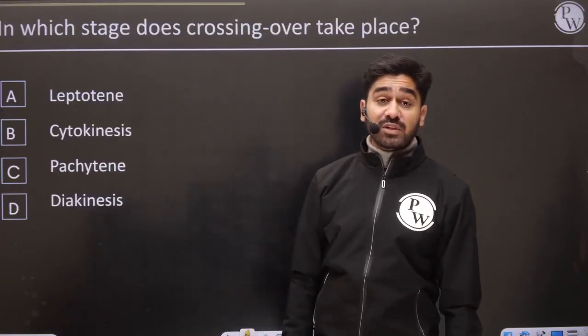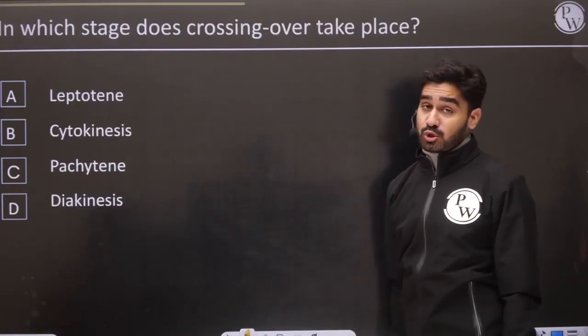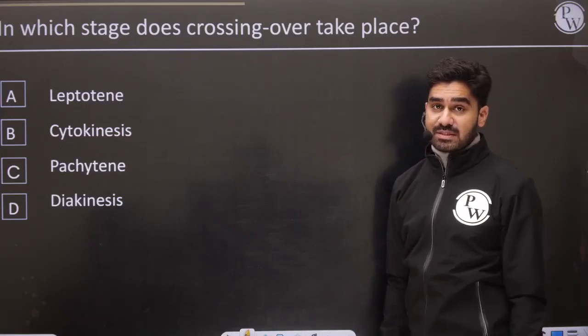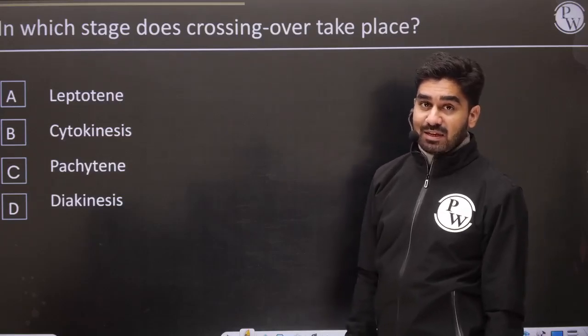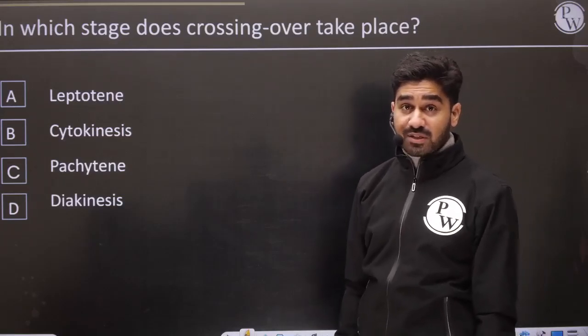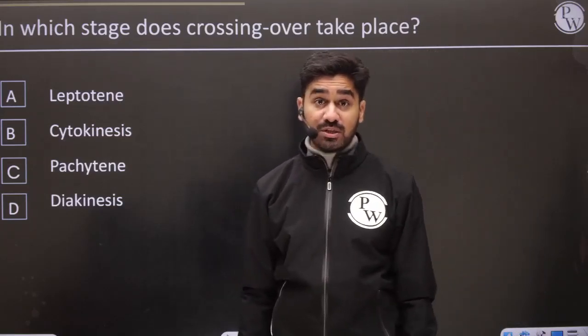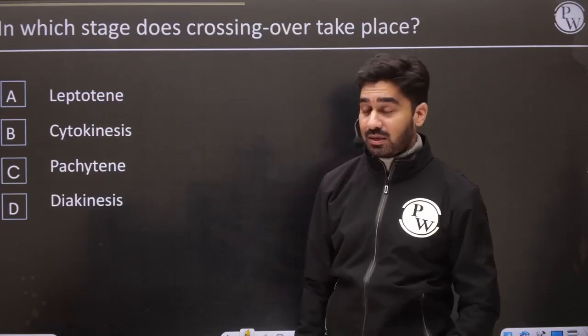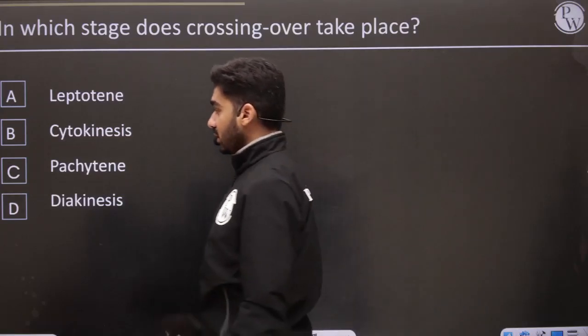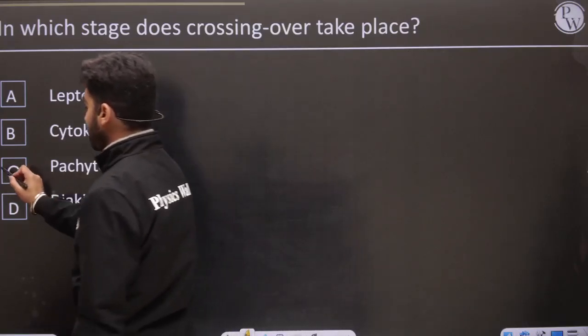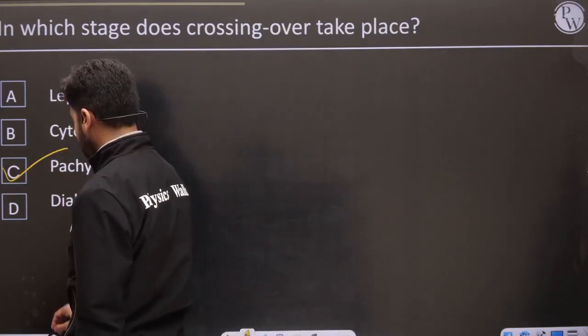In which stage does crossing over take place? Crossing over — we said recombination happens, and recombination occurs at the pachytene stage.